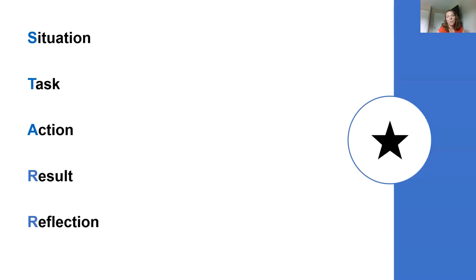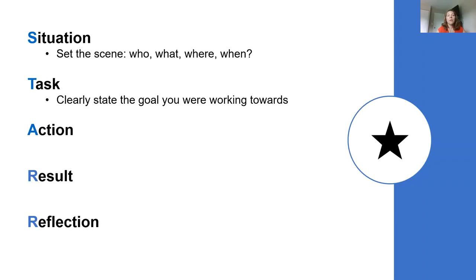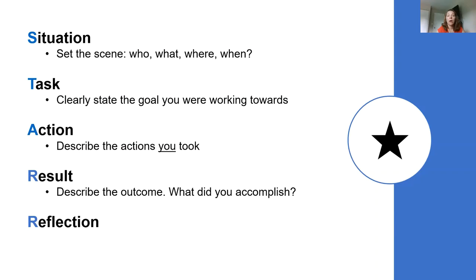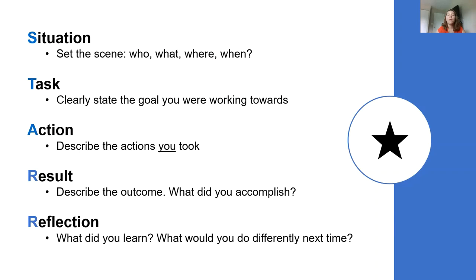The second R — Reflection — is a suggestion from one of the alumni I worked with who's now a hiring manager. When you have a behavioral interview question, start by setting the scene: who, what, where, when. Then clearly state the task or goal you were working towards. Next, describe the actions you took — they're interviewing you, not the entire team. Finish with the result: what was the outcome? And in some cases, add the reflection: what did you learn, or how would you do it differently next time?